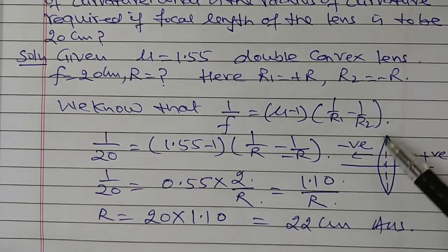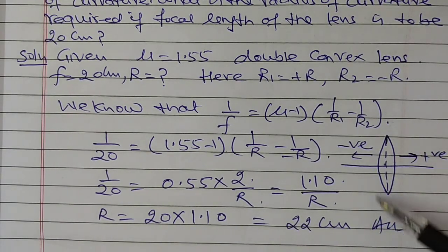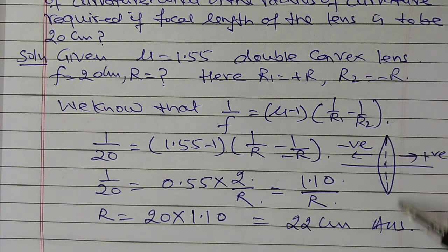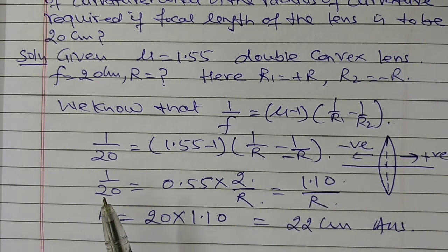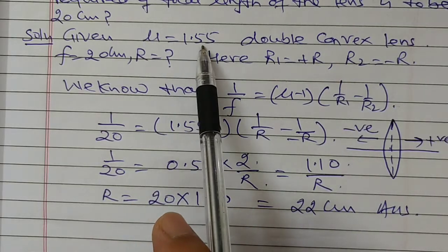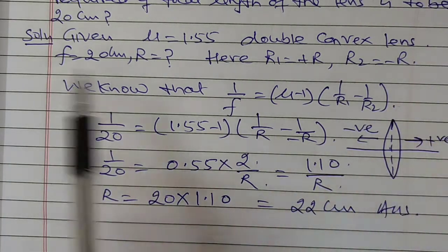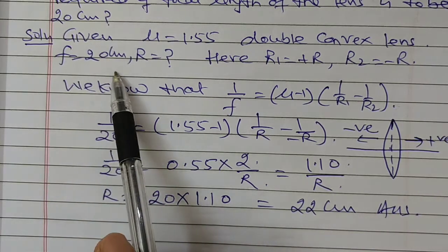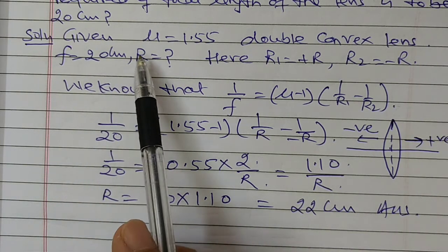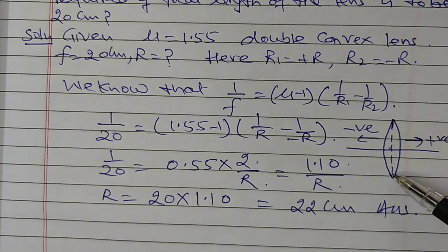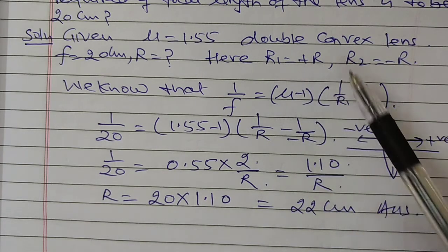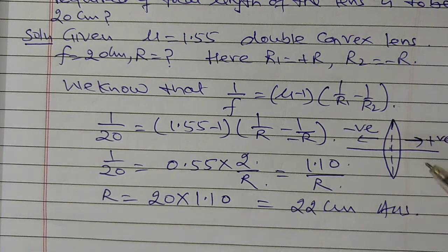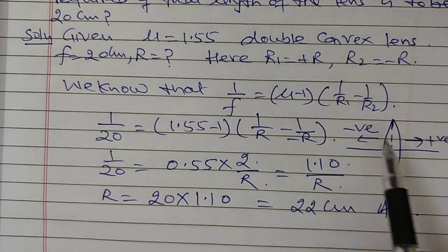Double convex lenses are to be made from material with refractive index 1.55, and the focal length is to be 20 cm. We need to find the radius of curvature.